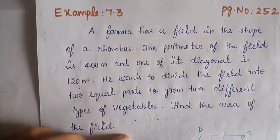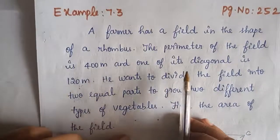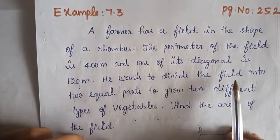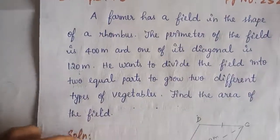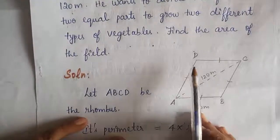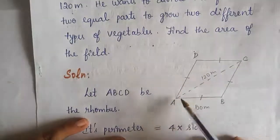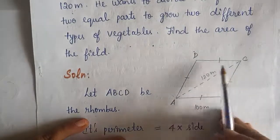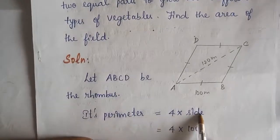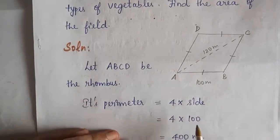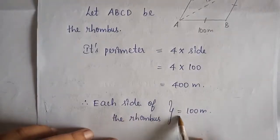Example 7.3, page 252: A farmer has a field in the shape of a rhombus. The perimeter of the field is 400 metres and one of its diagonals is 120 metres. He wants to divide the field into two equal parts to grow two different types of vegetables. Find the area of the field. Let ABCD be the rhombus. Perimeter = 4 × side = 400 m, so each side = 100 metres.